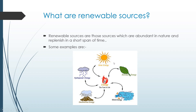Solar energy comes from the sun. Biomass energy is produced from kitchen waste and dead plants and animals. Wind energy is produced by windmills. Geothermal energy is produced by the heat inside the earth, and hydroelectricity is produced by water spinning turbines.